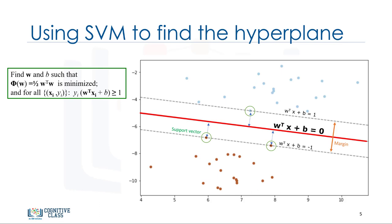It is enough to plug in input values into the line equation. Then, you can calculate whether an unknown point is above or below the line. If the equation returns a value greater than zero, then the point belongs to the first class, which is above the line, and vice versa.